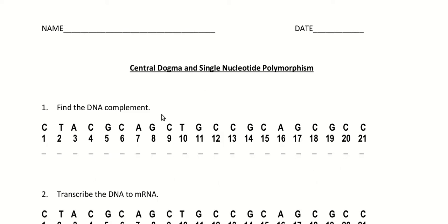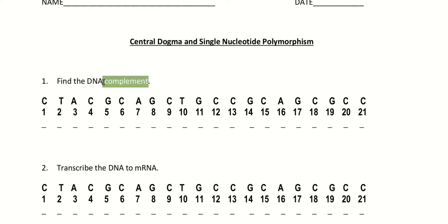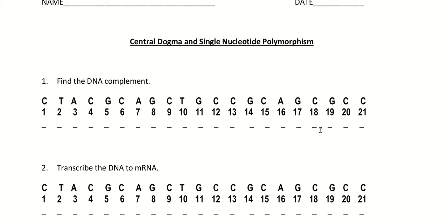The first part is to find the complement. The complement is simply what the other strand would be using our rules of making double-stranded DNA. So if I have a C here, you would have a G here. A T would be an A, an A would be a T, and a C gives another G, a G gives a C. Just complete this — pretty straightforward. You only have 21 bases to work with, so it's not a long assignment. On a real piece of DNA you'd use a computer for that.